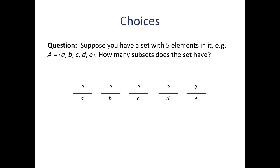So I'm going to put a two in each of those spaces to represent those two options for each one. Now at this point, the multiplication rule applies, and we can get the total number of combinations by multiplying all five of those twos together. In this case, two times two times two times two times two comes out to 32. So the total possible subsets of a set with five elements, like our set A, is going to be 32.